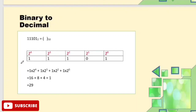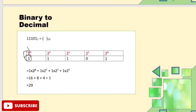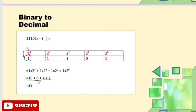Starting from the left-hand side, we multiply each digit by its positional value. For example, 1 multiplied by 2 to the power 4, plus 1 multiplied by 2 to the power 3, plus 1 multiplied by 2 to the power 2, and so on. Adding these up gives us the decimal answer. So 1101 in binary is equal to 13 in decimal.